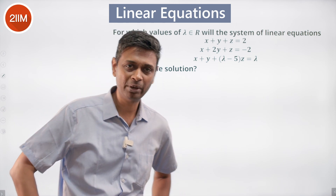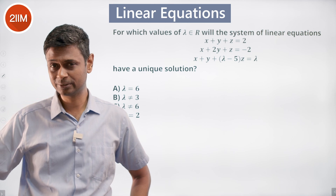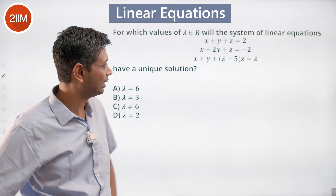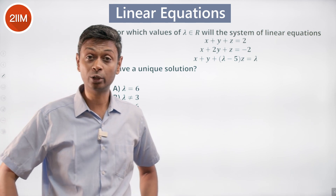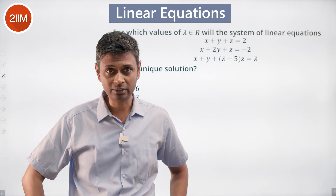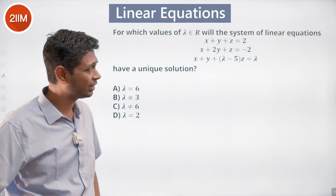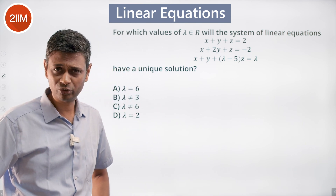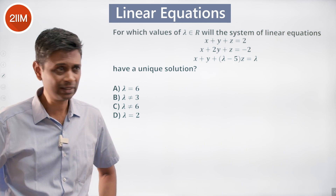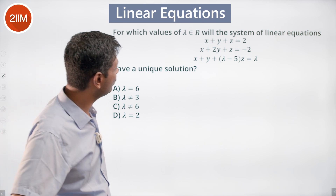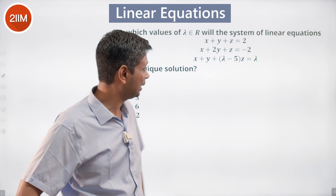We should not be able to combine two of the equations and get the third. If we cannot combine two equations to get a third, we are through. We can use a matrix and a determinant, check where the determinant does not go to zero, and simplify that — or we can manipulate the system algebraically.